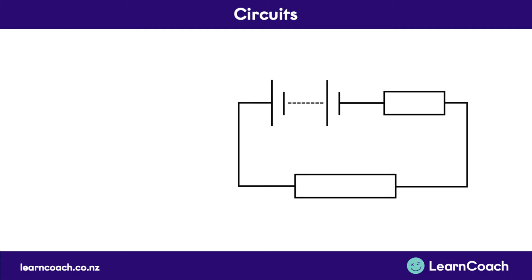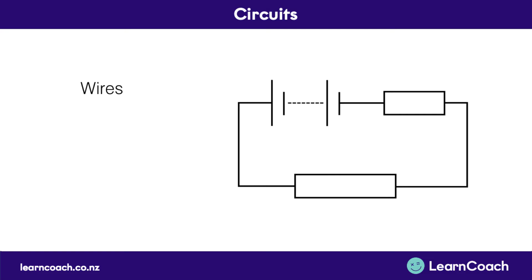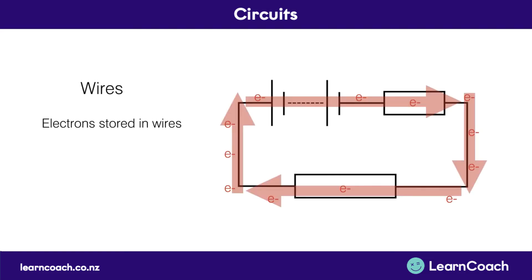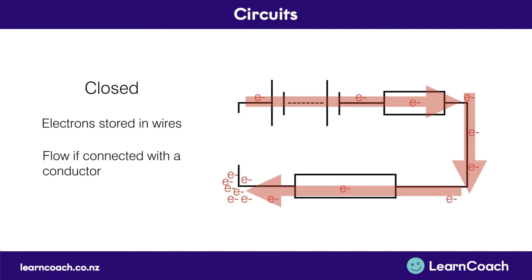This is what a circuit looks like. It must be closed, have wires, and also a component for it to be called a circuit. Wires connect the circuit up and have electrons stored in them. If there is a break in the circuit, or the circuit is not closed, the electrons won't be able to flow. There's a build up of electrons at the bottom, and this prevents the movement of electrons throughout the circuit.